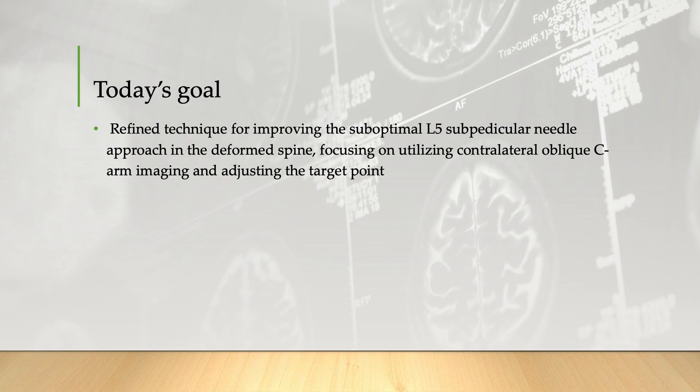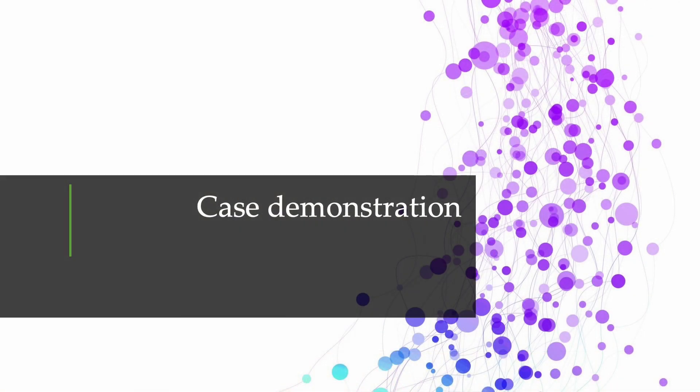Be prepared to navigate anatomical variations, which may include the downward extension of the transverse process, lateral expansion of the superior articular process, or situations that necessitate significant cranial tilting of the C-arm. In the ensuing series, I will walk you through various case scenarios you may encounter.